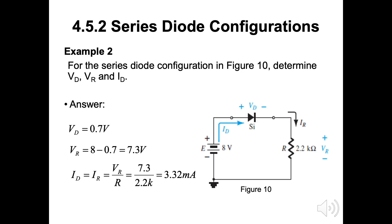In example 2, for the series diode configuration in figure 10, determine VD, VR, and ID. As the E is greater than silicon 0.7V, the VD became 0.7V. VR is the subtraction of E with VD, and VR is 7.3V. As in serial circuit, current value will be the same. IR equal to VR by R and will make the IR as 3.32mA.